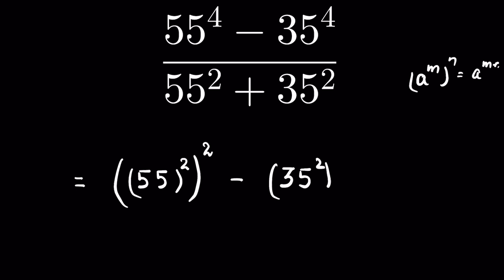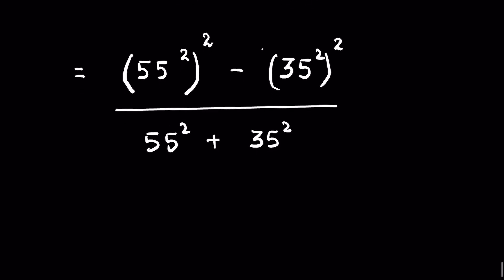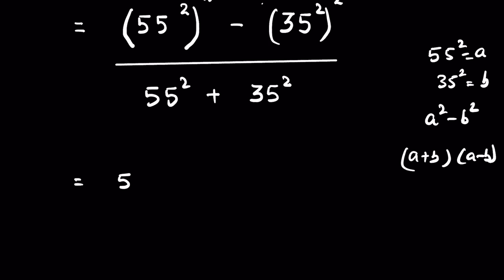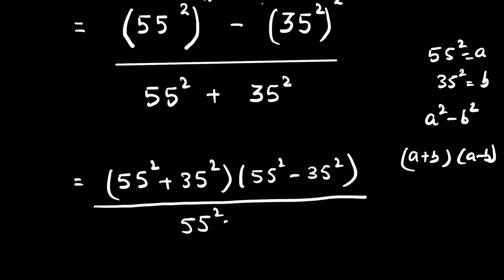So the expression becomes: 55 squared whole raised to the power 2, minus 35 squared whole raised to the power 2, upon 55 squared plus 35 squared. If we consider 55 squared as a and 35 squared as b, this is in the form of a squared minus b squared, which expands as (a + b)(a − b). So we write it as (55² + 35²)(55² − 35²) upon (55² + 35²), and we can cancel the common factor.